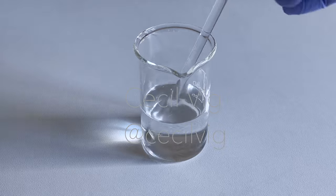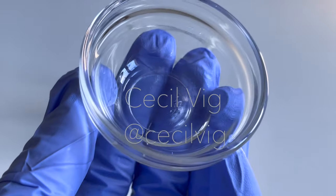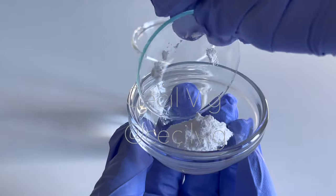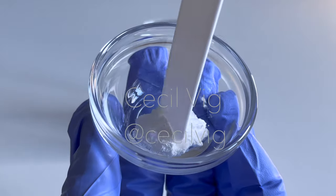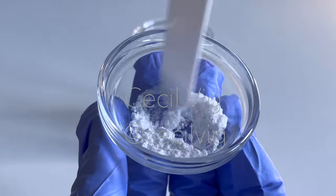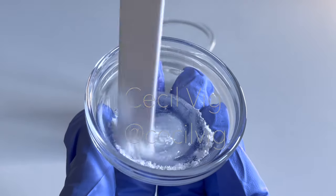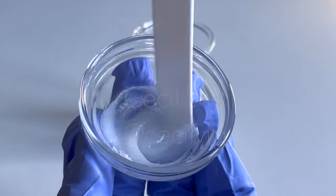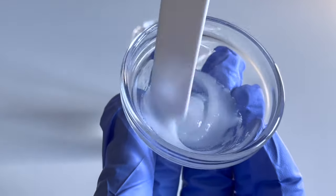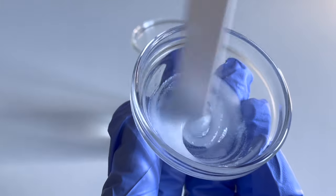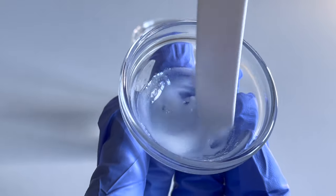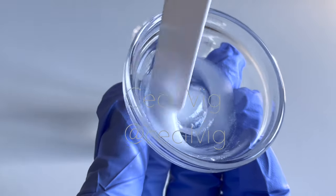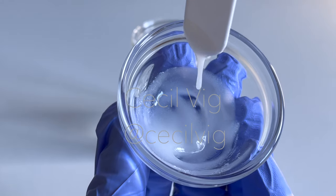After you have mixed in the preservative, take the vegetable glycerin, add the hyaluronic acid to the glycerin, and mix until they blend well. I decided to use the high molecular weight hyaluronic acid in this formula for its anti-aging benefits, for its moisturizing benefits, and also as a gelling agent, as it will help to give the serum a gel-like structure.